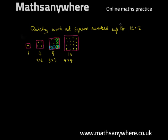And you can use this to work out all the square numbers up to 12 by 12. So one times one, you should have no problem with. Two times two, we've done as an example. Three times three, again, we've done as an example. Four times four, we've got in the form of a picture.